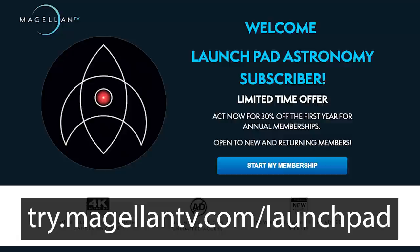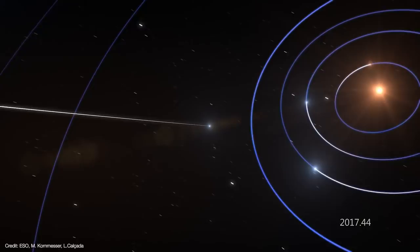When Oumuamua was discovered in October 2017, it had already made its closest approach to the Sun and was heading out from the inner solar system. Working backward, it was clear that it was on a hyperbolic orbit. In other words, it came from interstellar space and buzzed the Sun, never to return. What an exciting observation that was. I mean, it was our first recorded interstellar object.